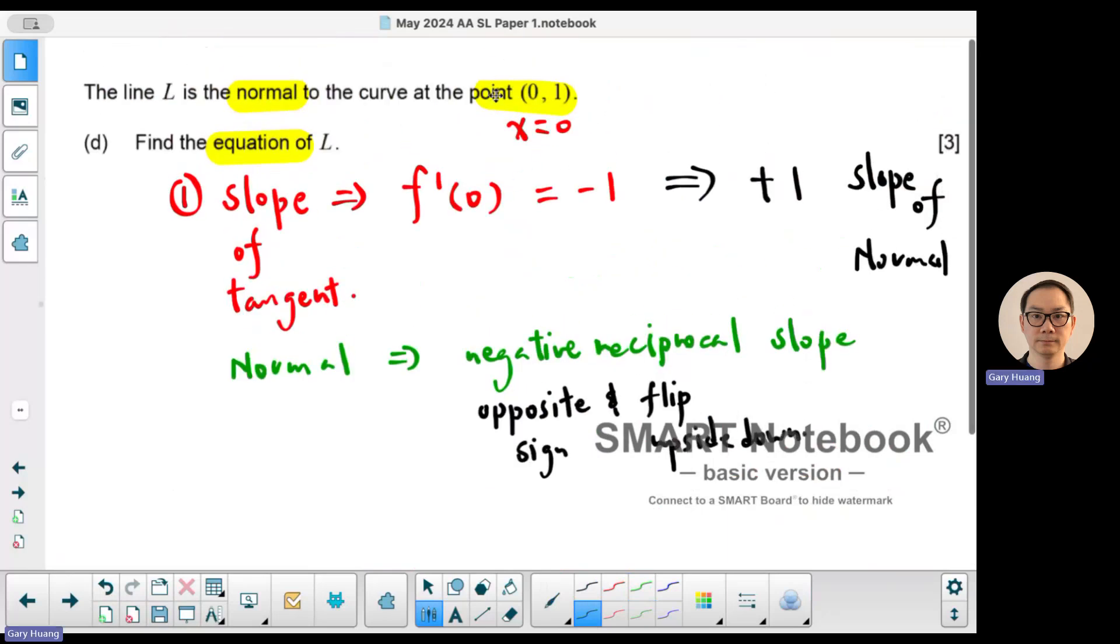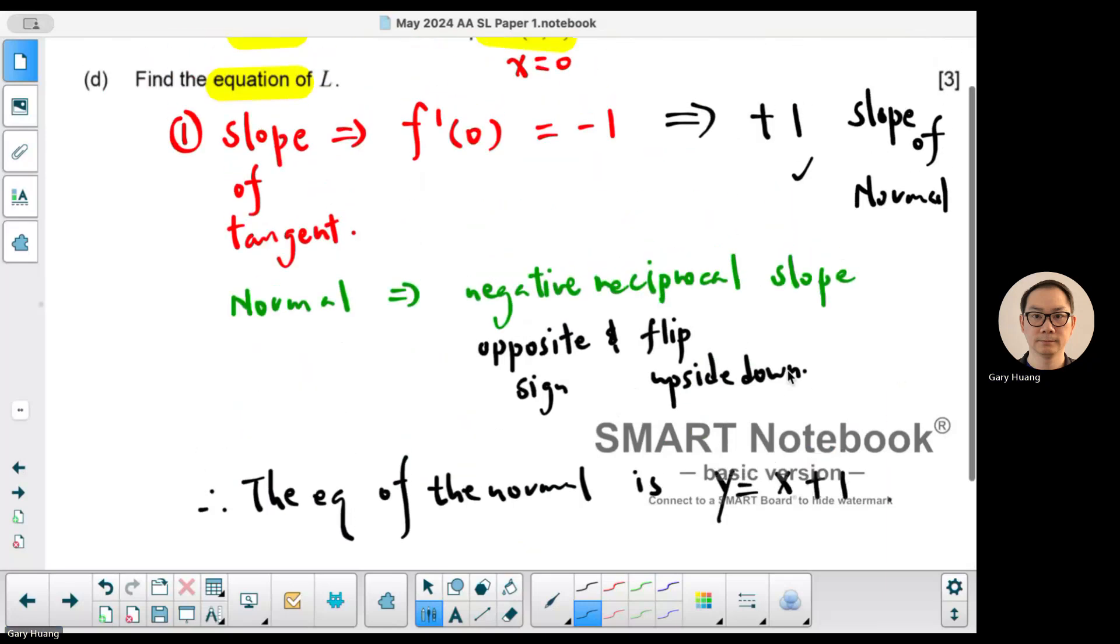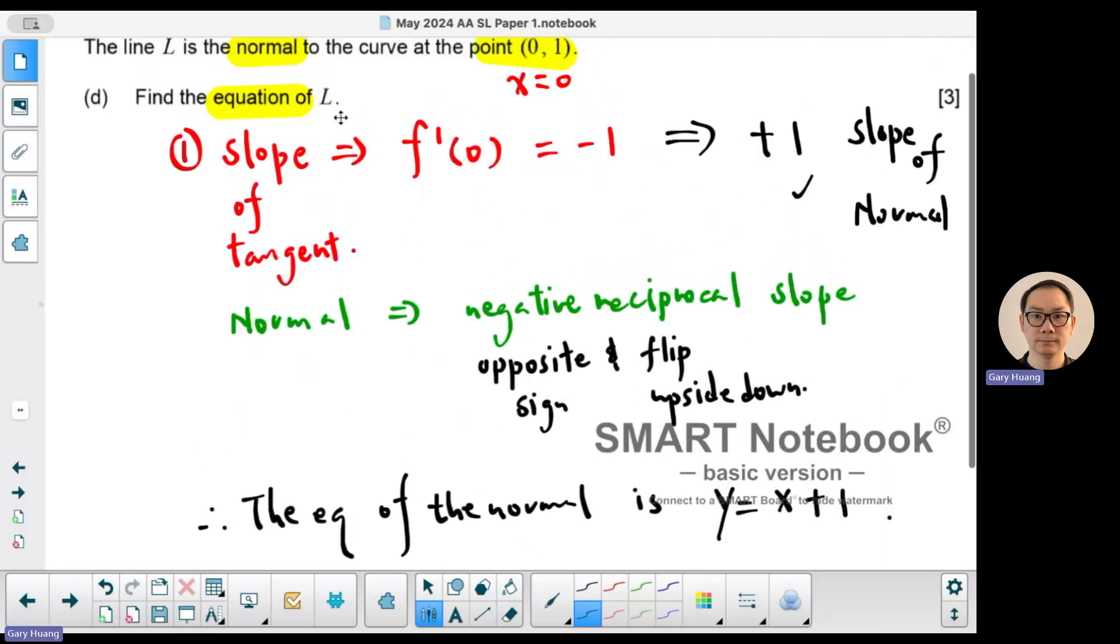And it's going to go through the point (0, 1). Well, (0, 1) is actually the y-intercept. So you have the y-intercept here, you have the slope there. All you have to do is write. Therefore, the equation of the normal is y equals 1x + 1. Equation of the normal.